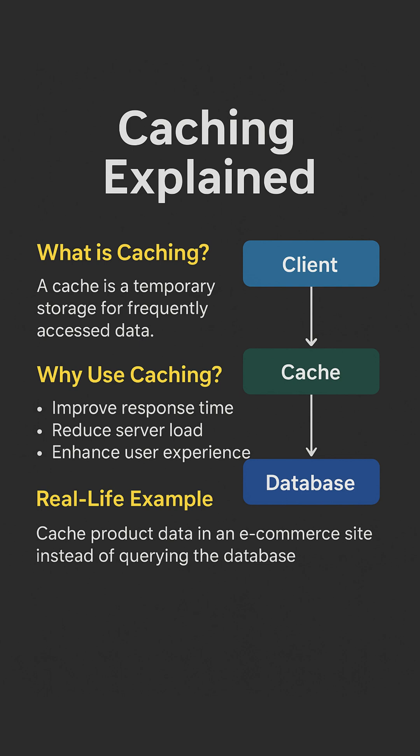Instead of querying the database for every user, you cache the product list for maybe five minutes, so users get blazing fast responses and the back end breathes easy. In Java, we use things like Spring Cache, Ehcache, or Redis cache. In React, we can cache API responses using tools like React Query or local storage.